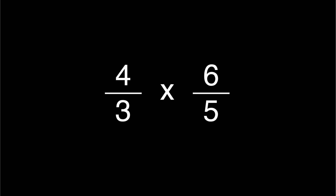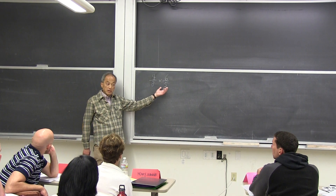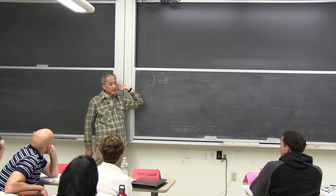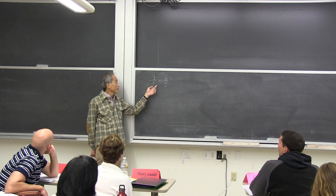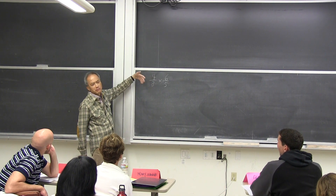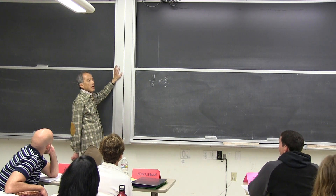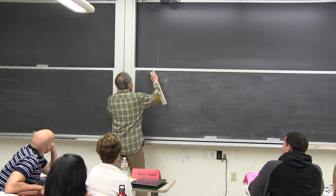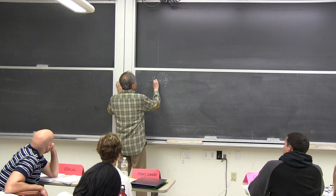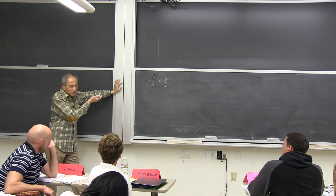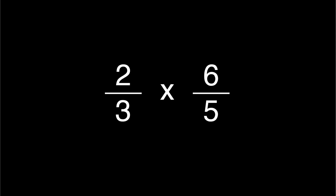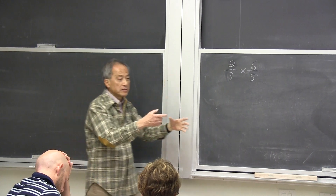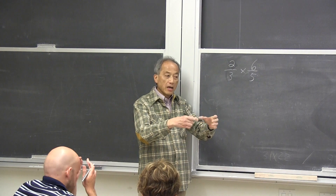Suppose I said, you go back to your everyday language. You bought a piece of cheese — 6 fifths of a pound. Let's take it 2 thirds instead. So you anticipate that this is going to end up being 2 thirds of 6 fifths. So when you say I have a piece of cheese, 6 fifths of a pound, and I give away 2 thirds of it — what do you mean by that?